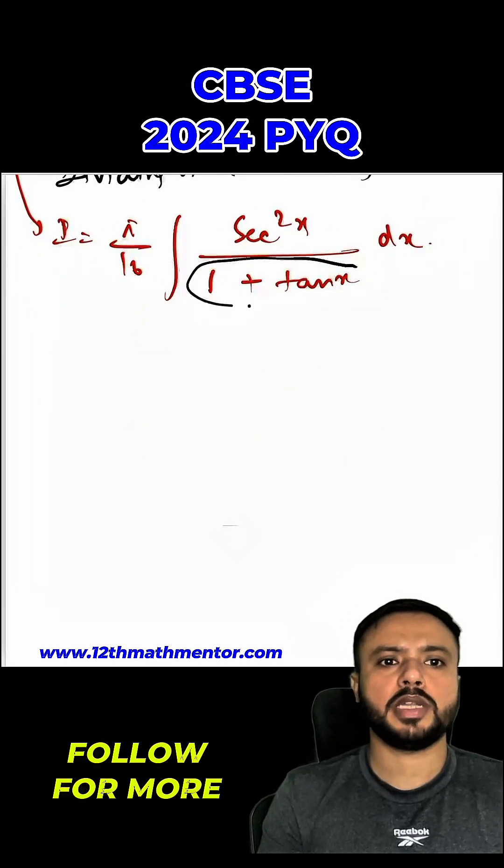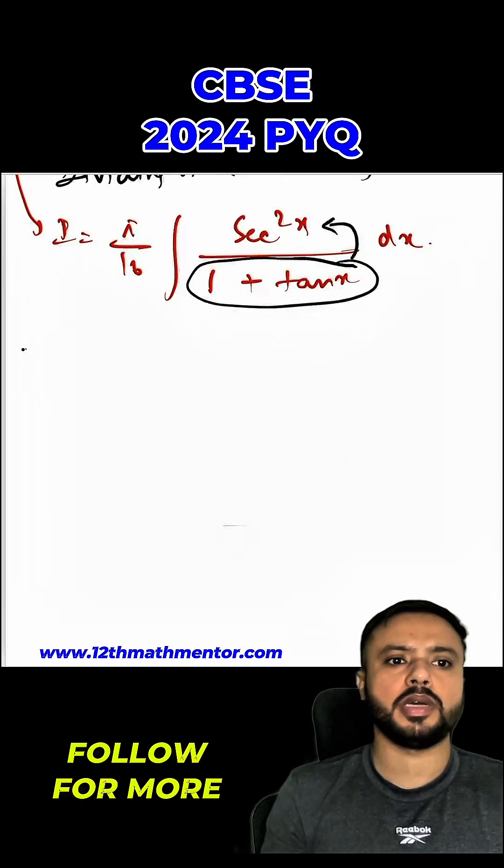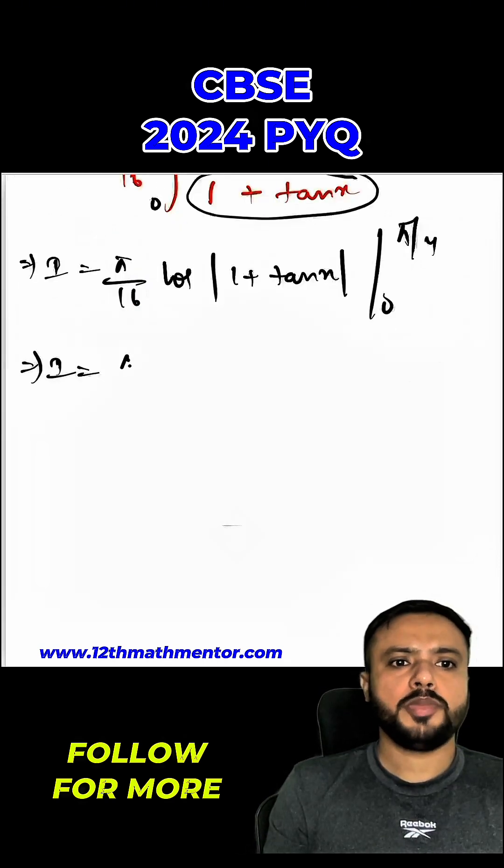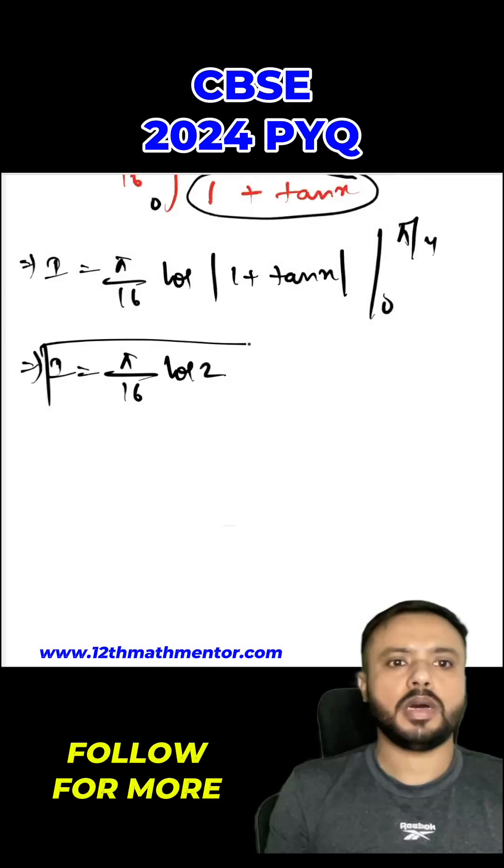Now, we can clearly see that 1 plus tan x is the derivative of our numerator present here. So, that means i will be equal to pi upon 16 log of 1 plus tan x from 0 to pi upon 4. Now, when we will substitute the limits, I will get pi upon 16 log 2 as my answer.